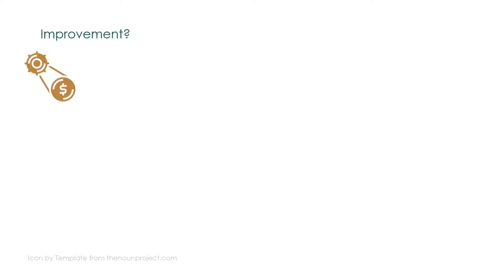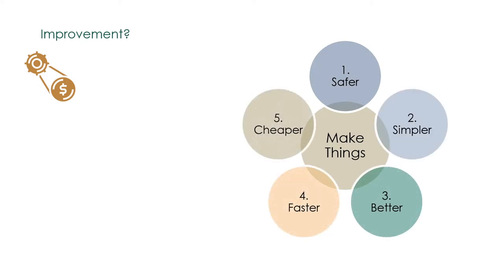So what is improvement in your organization? In five words, make things safer, simpler, better, faster, and cheaper.